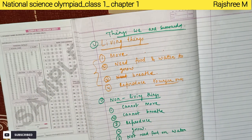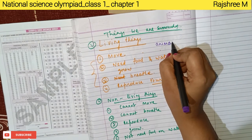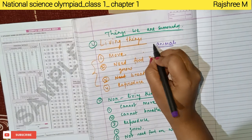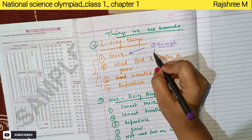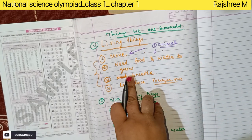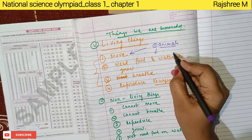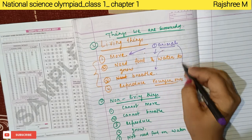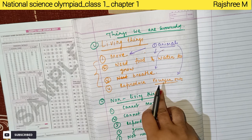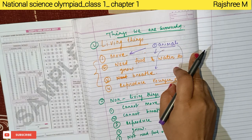Let me give you a few examples of living things. Animals — first, they can move. Yes, they can move. They need food and water to grow, they breathe, and they reproduce younger ones. So animals are living beings.